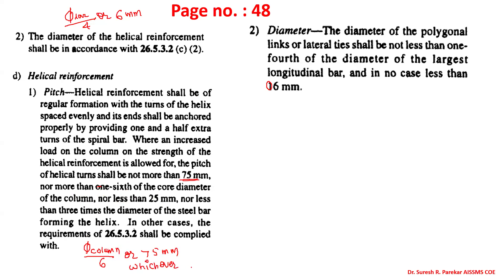The maximum pitch is the lesser of 75 mm or one-sixth of the column diameter. The minimum distance is not less than 25 mm, nor less than three times the diameter of the steel helix. So minimum pitch: we must not go below 25 mm and not below three times the helix diameter — the greater of the two governs.